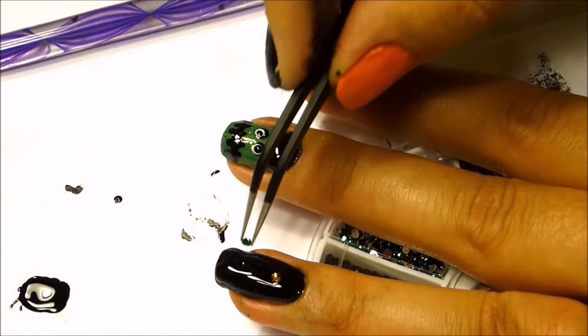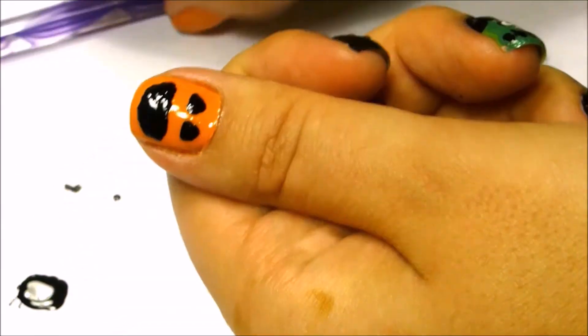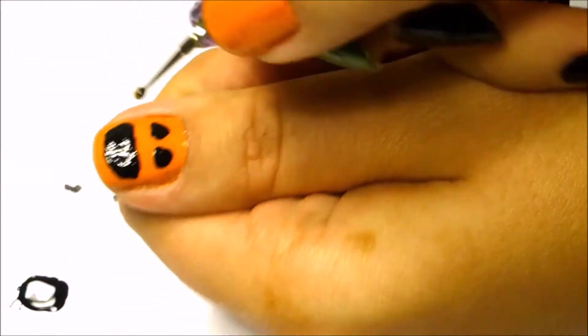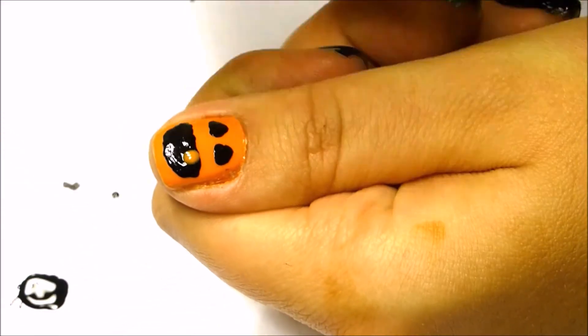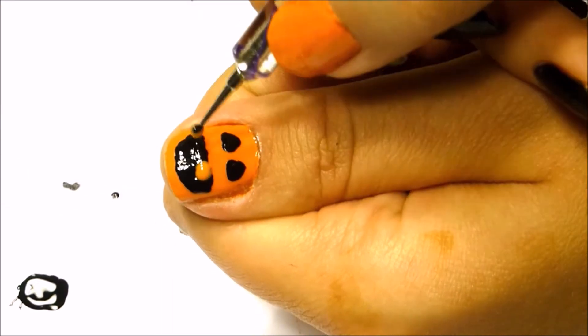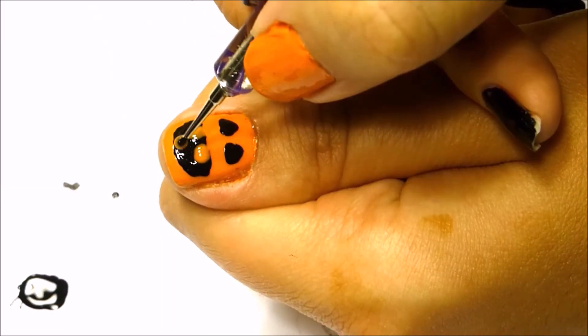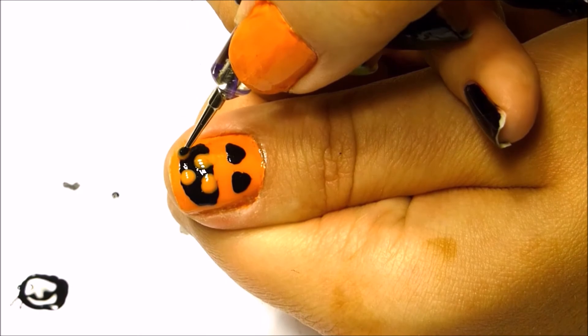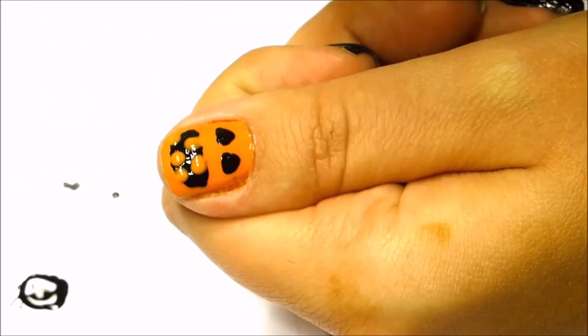Then I just dab orange for where the teeth are on my jack-o-lantern and he's basically done. Remember to put on your top coat once these puppies dry a little bit.